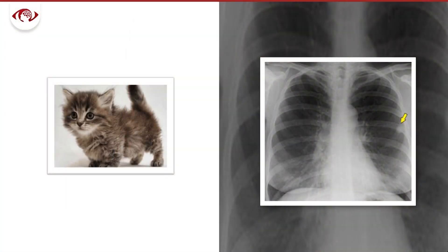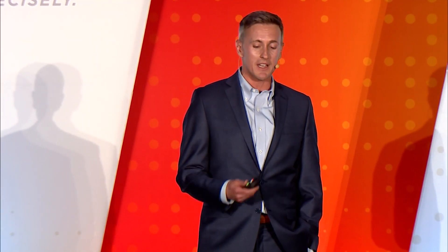Medical imaging isn't easy — it's a little bit harder than cat pictures. Most of the pixels in a cat image tell you there's a cat there. But most of the pixels in a chest X-ray actually tell you this person's healthy, and it's only that small area indicated by the arrow that tells you the person actually has a deadly lung cancer. Making a mistake here is a problem, so we need to get it right.